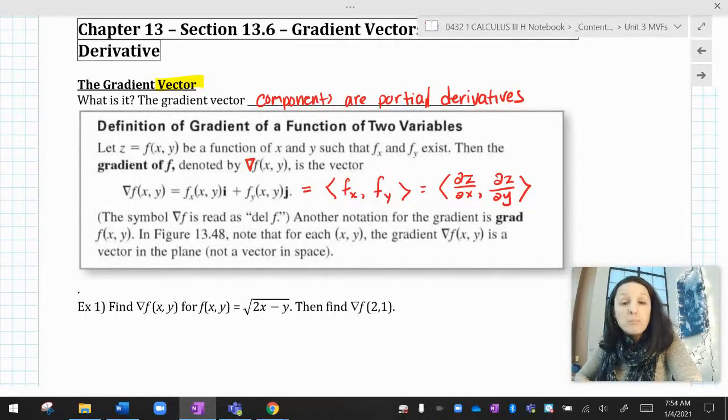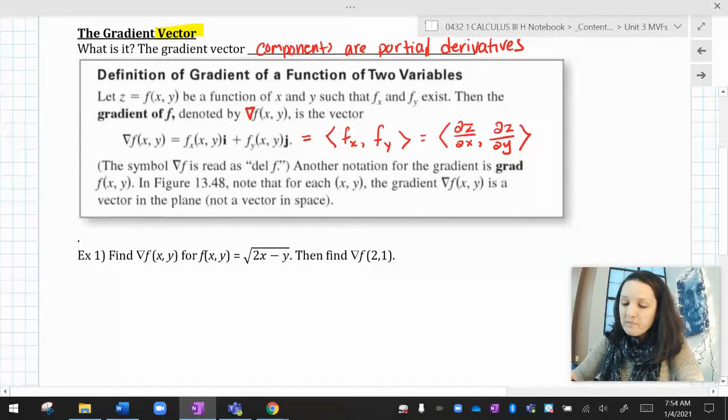And you can do this with more components. If you had a function of three variables, then you could have a gradient vector that would have three components.